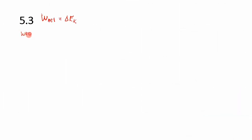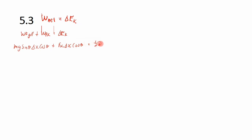We say: work done by Fg parallel plus the work done by Fk equals the change in kinetic energy. Substituting: mg·sinθ·Δx·cosθ plus Fk·Δx·cosθ equals ½m(vf² − vi²). The mass of the truck is 30,000 kg, g is 9.8, sine theta is the sine of the incline angle, and Δx is what we are looking for.